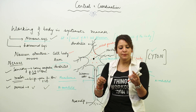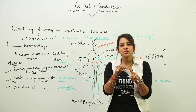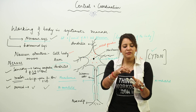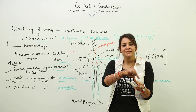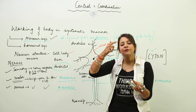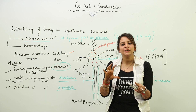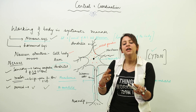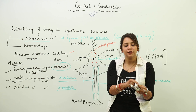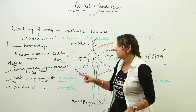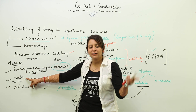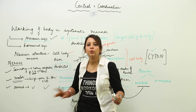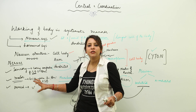For example, if something pricks your finger, the sensory nerve carries the impulse from the finger to the brain. The brain analyzes that something pricked your finger and that you need to remove it. The response is then brought by the motor nerve to the sensory organ. The nerve carrying the response is the motor nerve, and mixed nerves can perform both tasks.